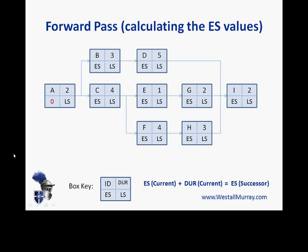Then we calculate the early start of B and C, because those are both next activities. Using the formula — early start of A added to the duration of A — gives us two. So for B we get two, and for C we get two. Because activity A starts at zero and lasts two days, the earliest that B and C can possibly start is at day two. We can move across the network doing D, E, and F the same way, and fill in values for G and H. But when we get to I, we have three paths that feed into I — in other words, a join.